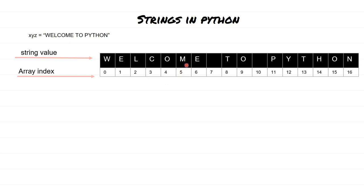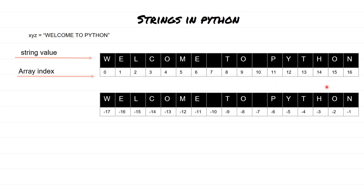This understanding will be very useful because once you know this you will be able to slice any index. For example, if you want to find what is at the fifth position, the letter at array index five is 'm'. You can also understand negative slicing — if you want to traverse the string in a negative way, the last character is minus one, the second last is minus two, the third last is minus three, and so on.